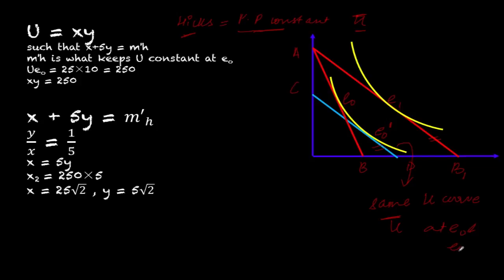So e0 and e0-dash must lie on the same utility curve, which means utility is constant at both e0 and e0-dash. That is how Hicks differentiates substitution from income effect — the definition remains the same, e0 and e1 are the same, but the approach to keeping purchasing power constant differs.